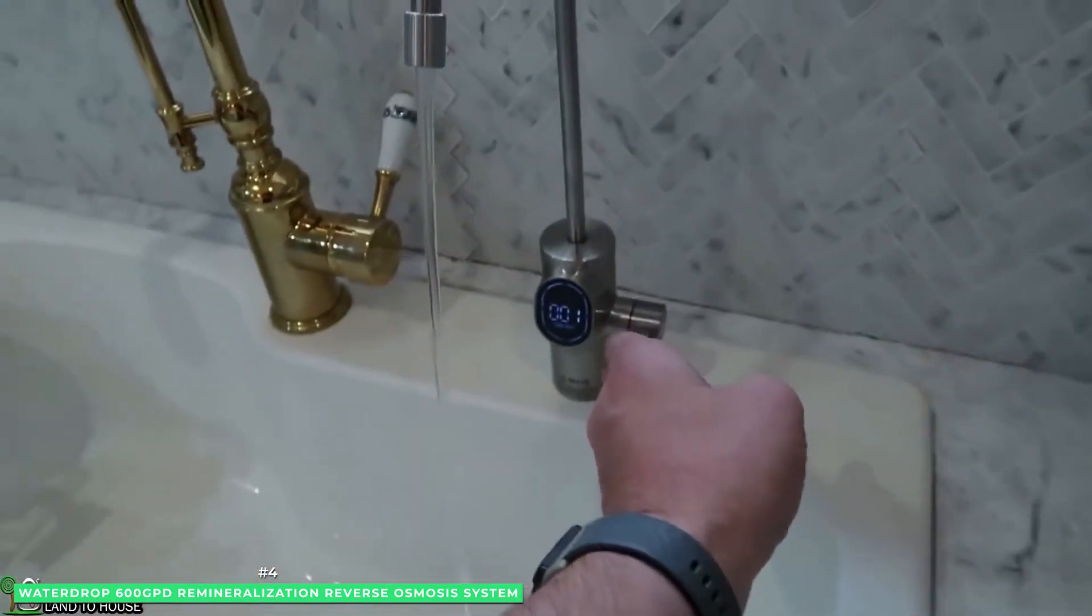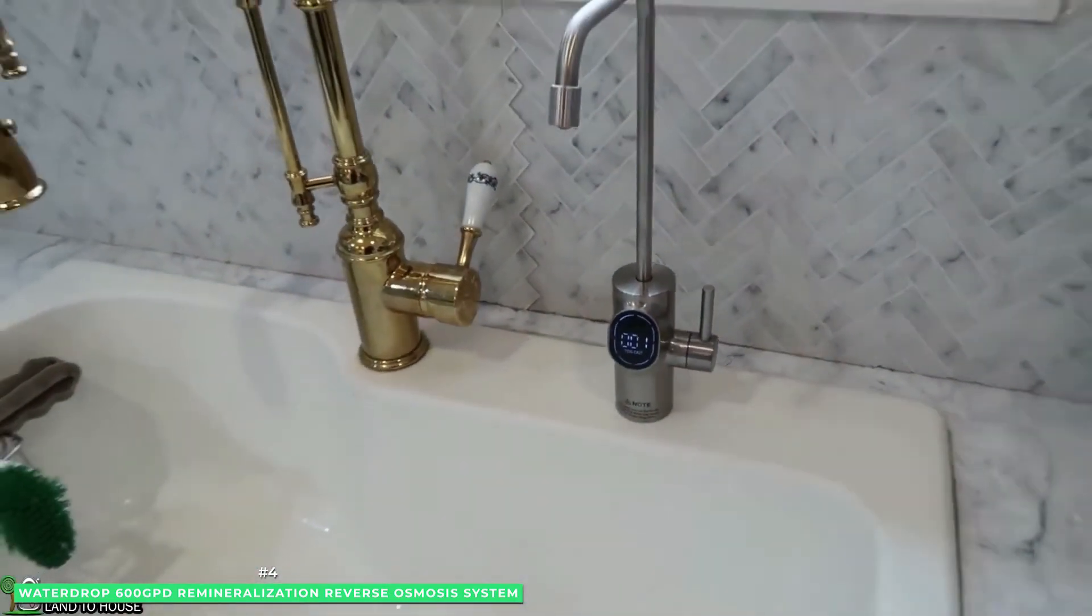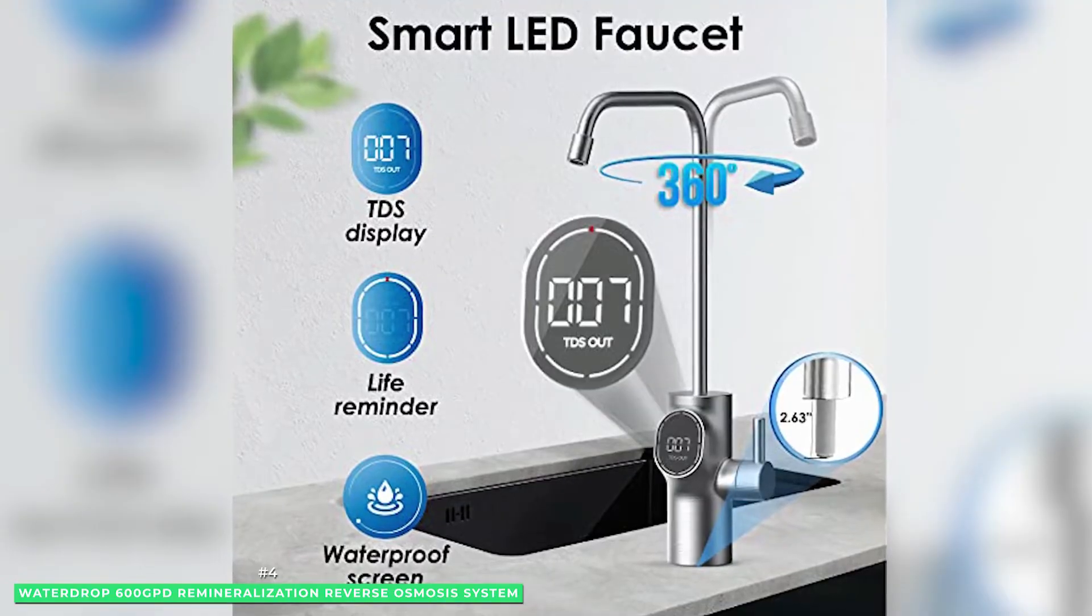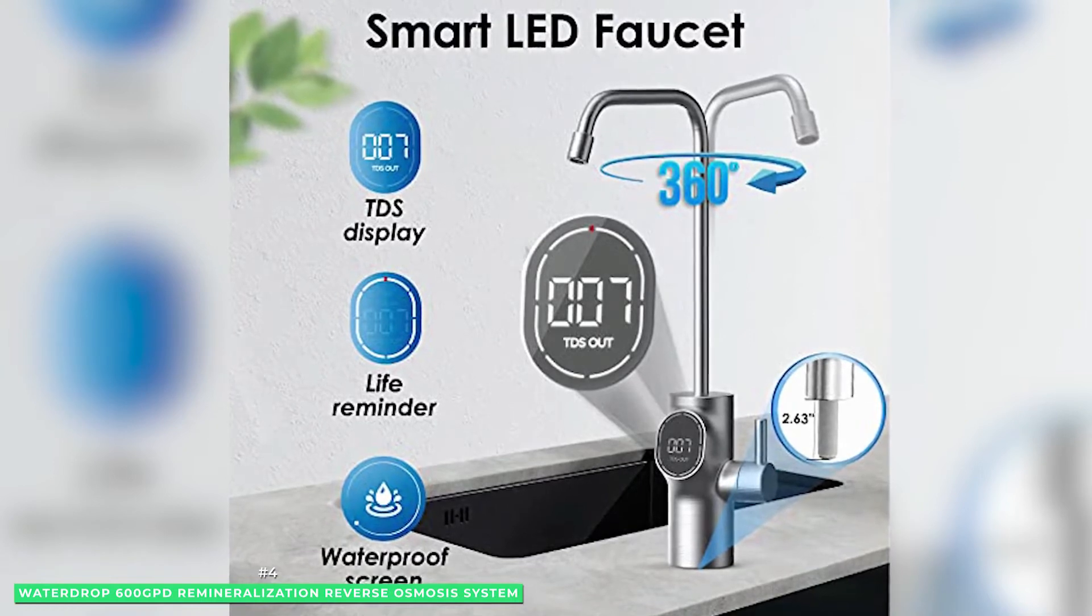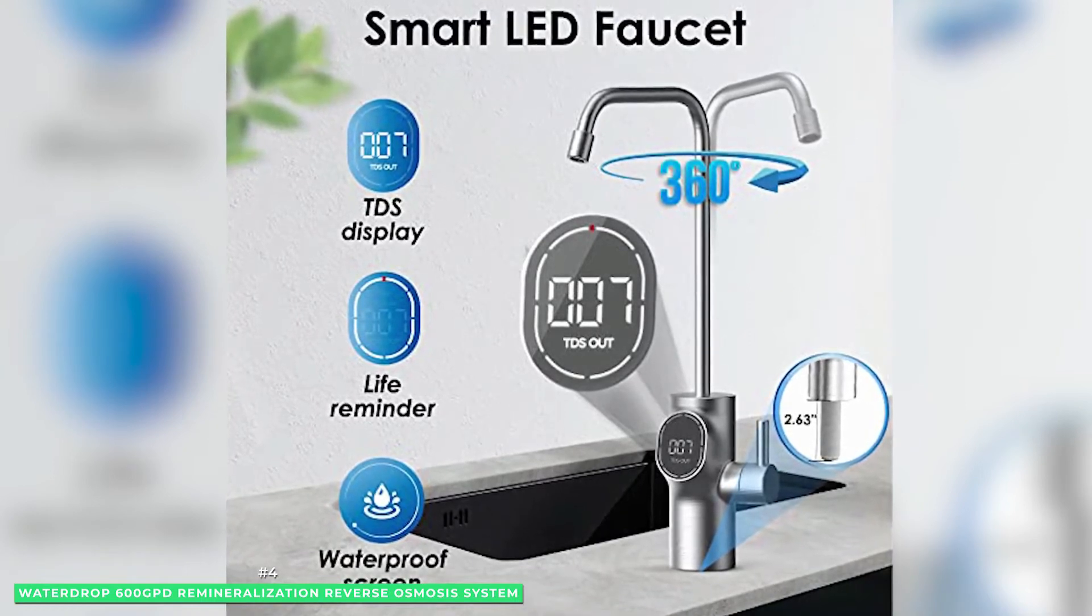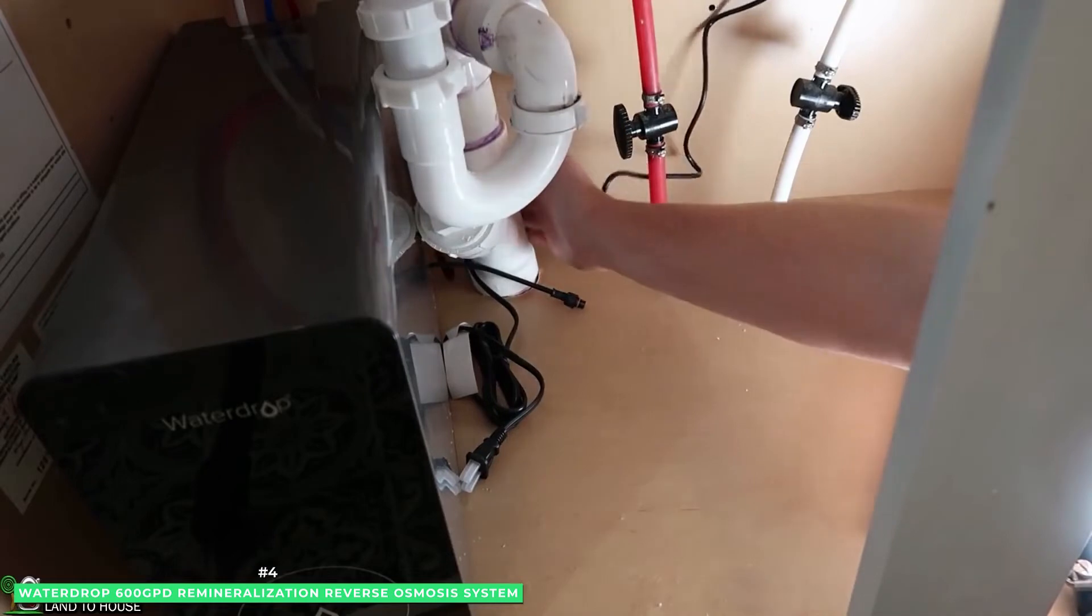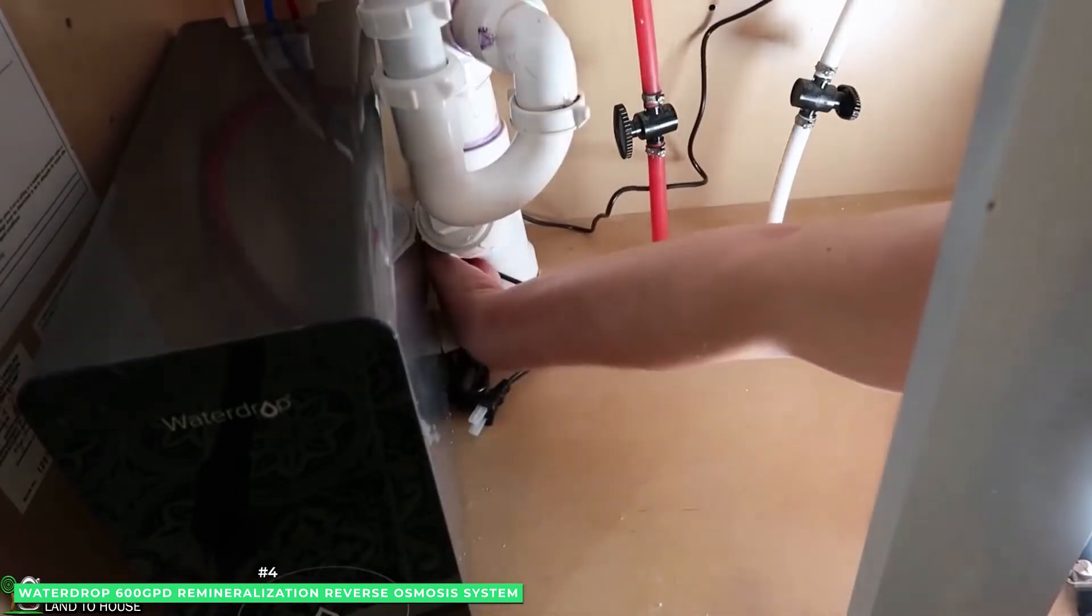The technologically advanced screen shows real-time TDS levels and your remaining filter life. The tankless design measures 16 inches high by 6 inches wide by 12 inches deep and prevents bacteria and viruses.